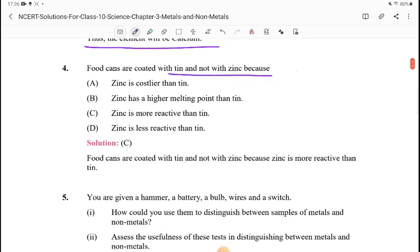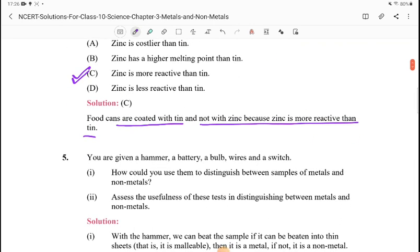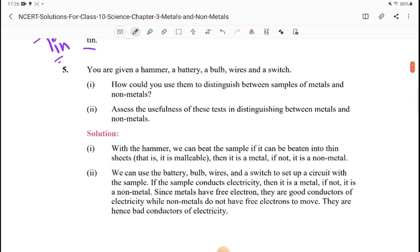Question 4: Food cans are coated with tin and not with zinc. Why not coating with zinc? Because zinc is more reactive than tin. Zinc is more reactive, so it will react with the food. Food cans are coated with tin and not zinc because zinc is more reactive than tin.